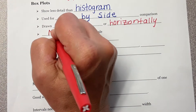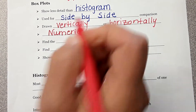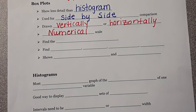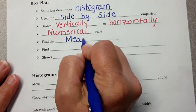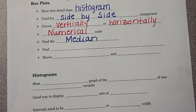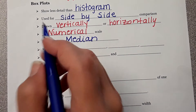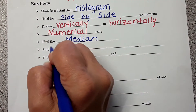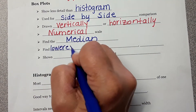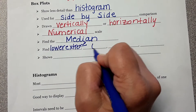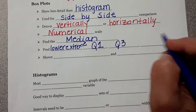A box plot has a numerical scale. The box plot uses the median, so we need to find the median. The median is the center — from smallest to largest. There are two ways to find the median in your calculator. You also need to find the lower extreme, Quartile 1, Quartile 3, and the upper extreme.